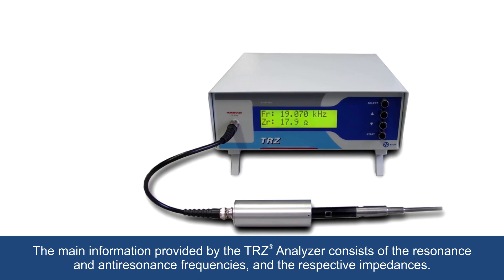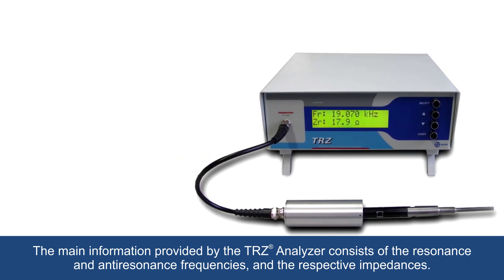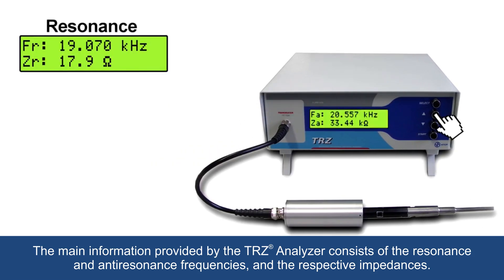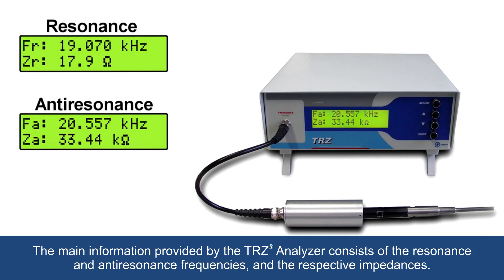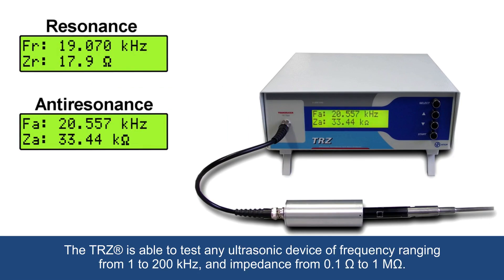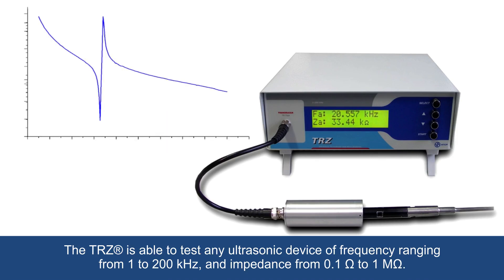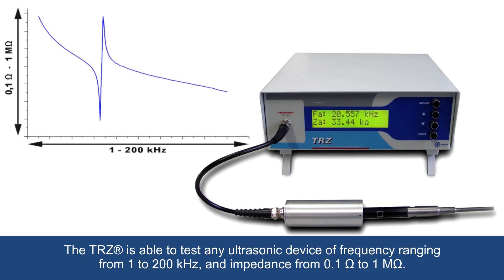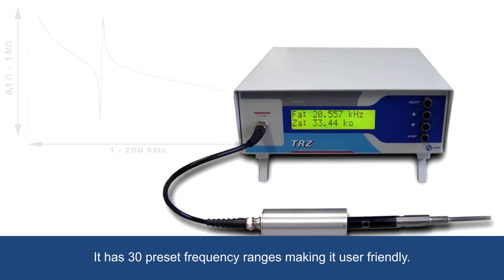The main information provided by the TRZ analyzer consists of the resonance and anti-resonance frequencies and the respective impedances. The TRZ is able to test any ultrasonic device of frequency ranging from 1 kHz to 200 kHz, and impedance from 0.1 ohm to 1 mega ohm.